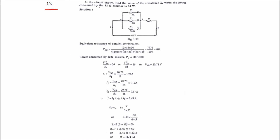Problem number 13: in the circuit shown, find the value of resistance R when the power consumed by the 12 ohm resistance is 36 watts. There are three resistances connected in parallel, and this combination is connected to a resistance R in series. We have to find out the value of R. They have given the power across R1.